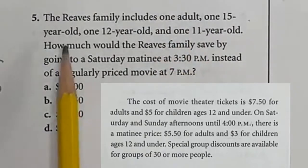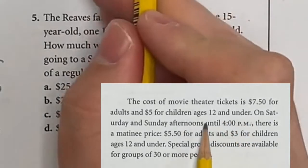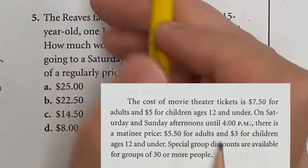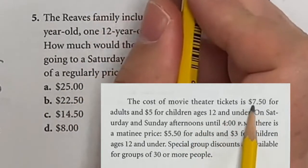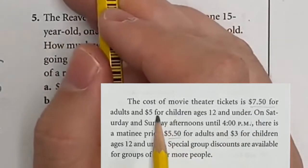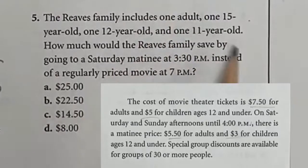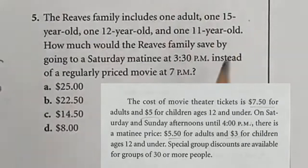Number 5 is asking for the discount. If they have a family with one adult, one 15-year-old, 12-year-old, and 11-year-old — here's the deal: adult tickets go from $7.50 to $5.50, so they get $2 off. Children's tickets go from $5 to $3, so that's also $2 off. The ages actually don't matter. If there's four of them, you just do four times $2 off each, giving us a total of $8.